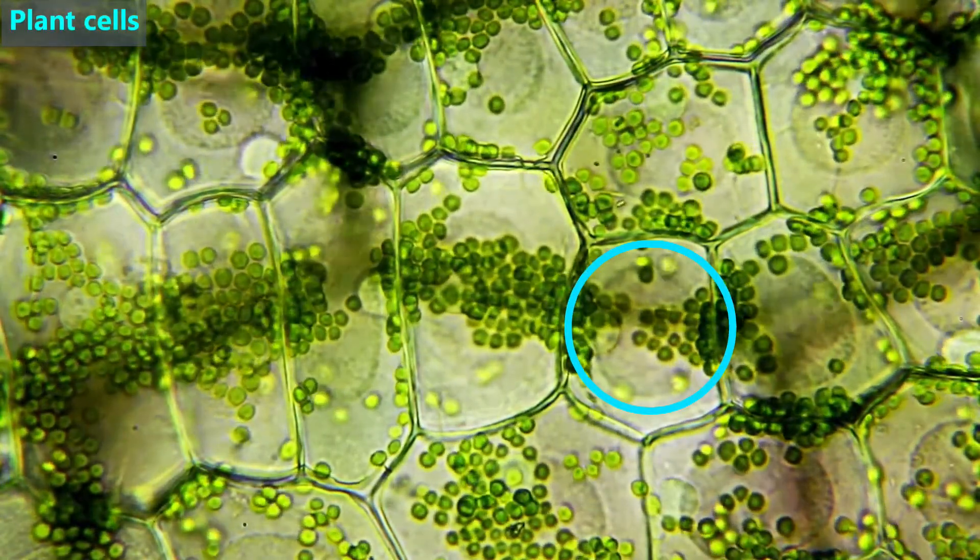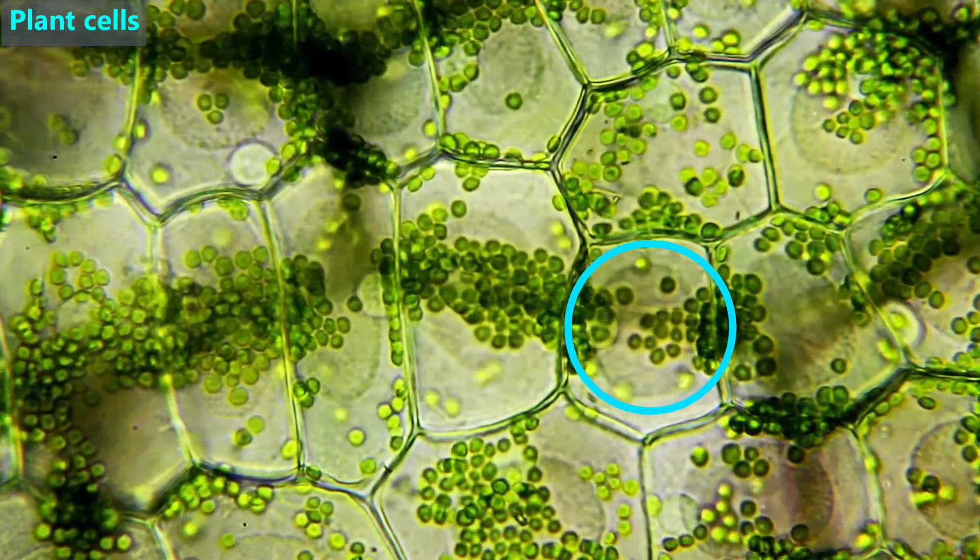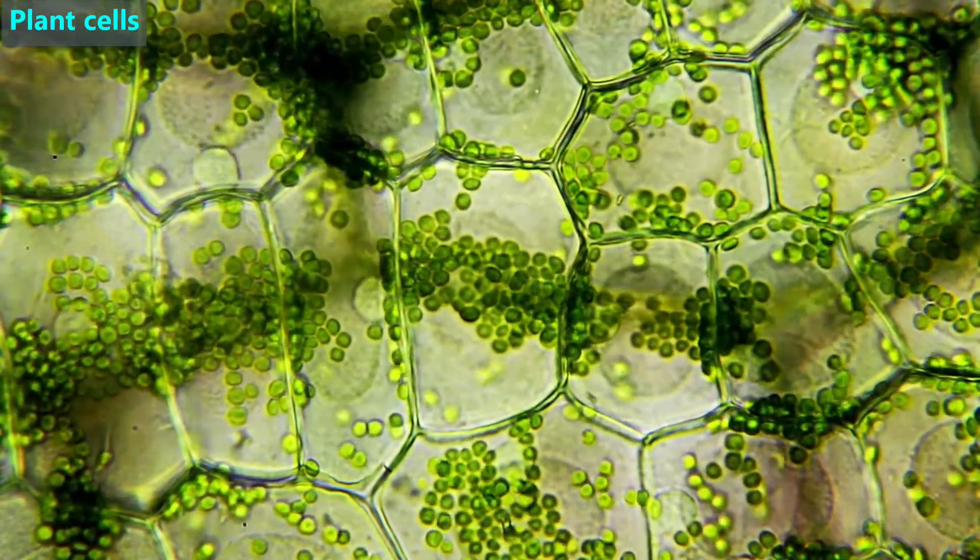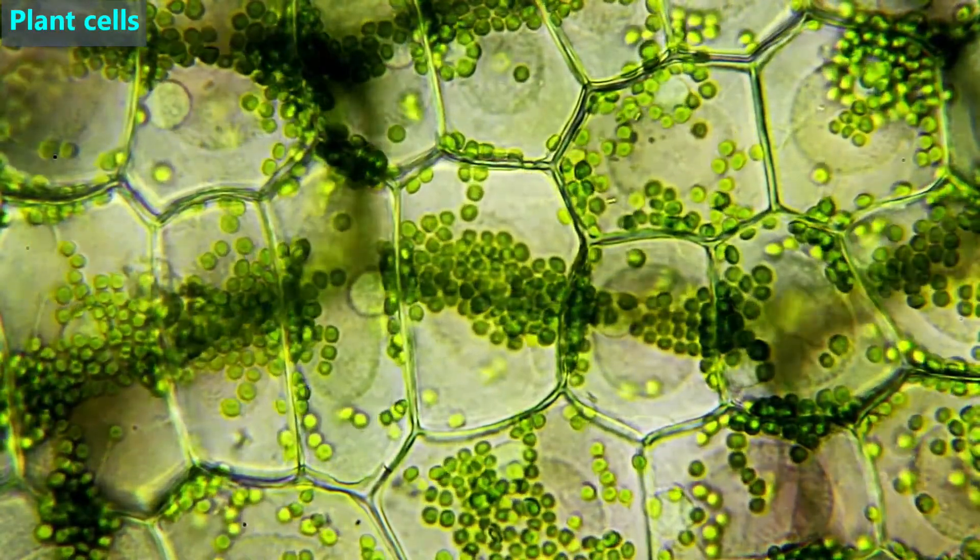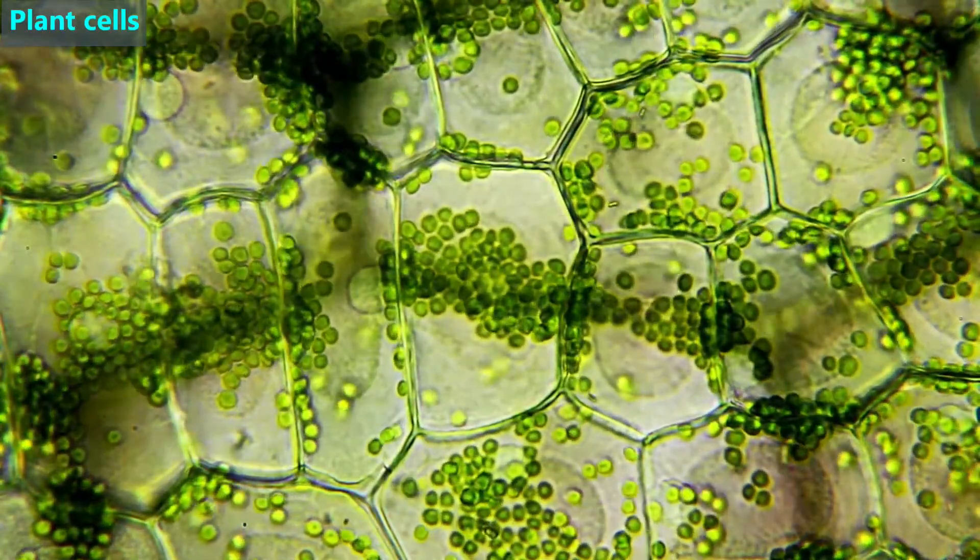Each cell has a circular faint disc, which is its nucleus. The nucleus contains the cell's DNA. That DNA directs the cell to take on a specific structure and function.